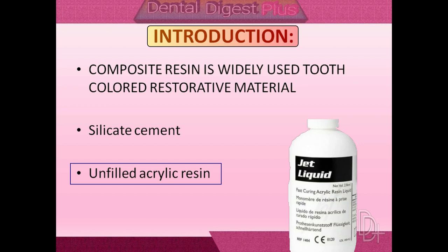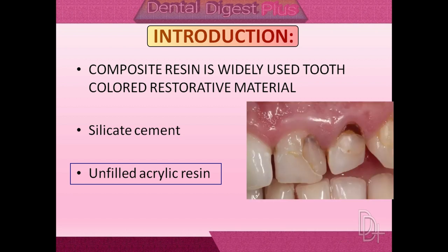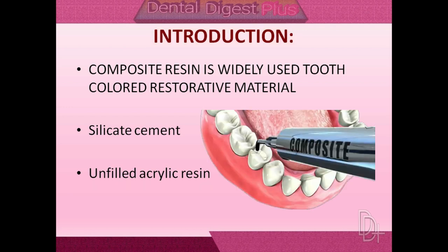Acrylic resins are also tooth-colored materials, so they replaced the silicates during the late 1940s because of their tooth-like appearance. Acrylic resin is insoluble in oral fluids, easy to manipulate, and low in cost. Unfortunately, these acrylic resins also have poor wear resistance and shrink severely during curing, causing them to pull away from cavity walls and produce leakage along margins. Their excessive thermal expansion and contraction cause further stresses at cavity margins. These problems were overcome by the introduction of composites, by adding an inert filler to the unfilled acrylic resins.